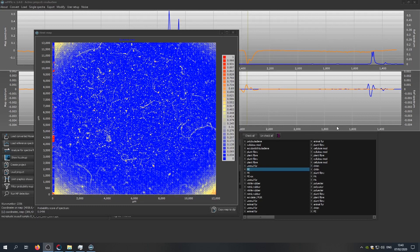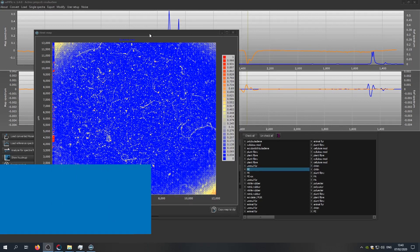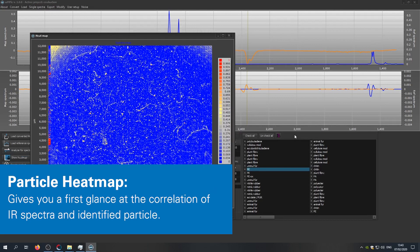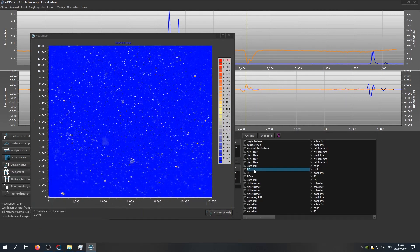After the correlation analysis is done, you can have a first look at your sample by opening the heat map and show the correlation to a certain reference spectrum just by clicking on it. And you will be shown the correlation map for this polyethylene type or for example polyamide.